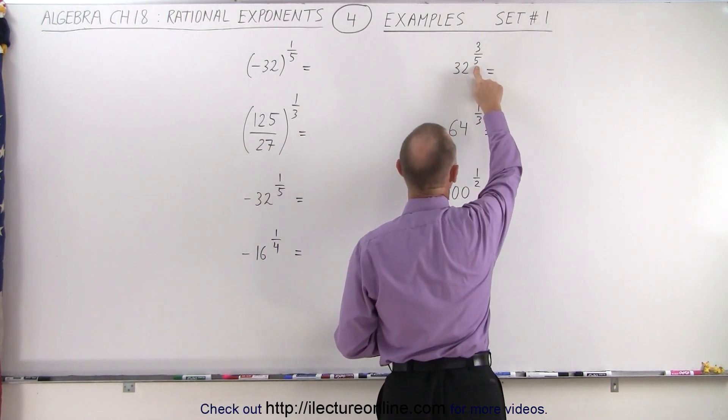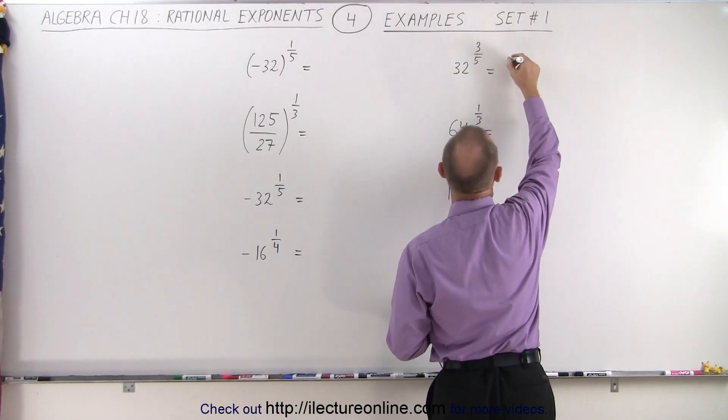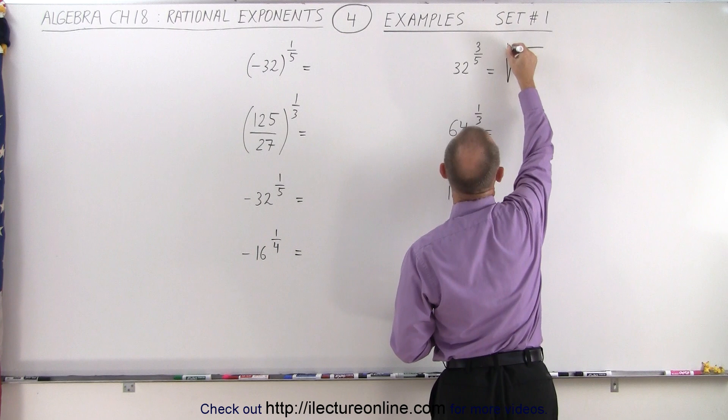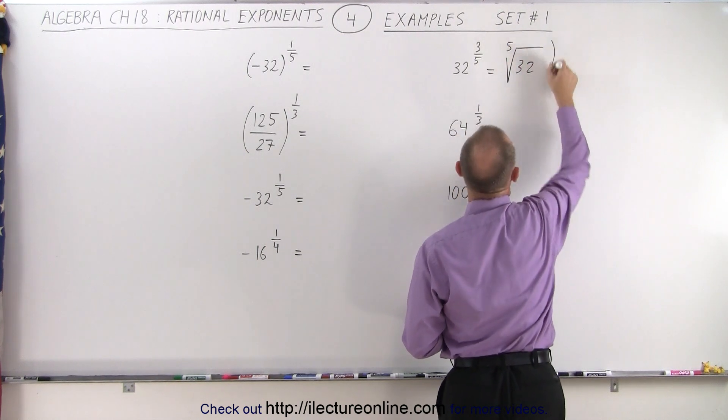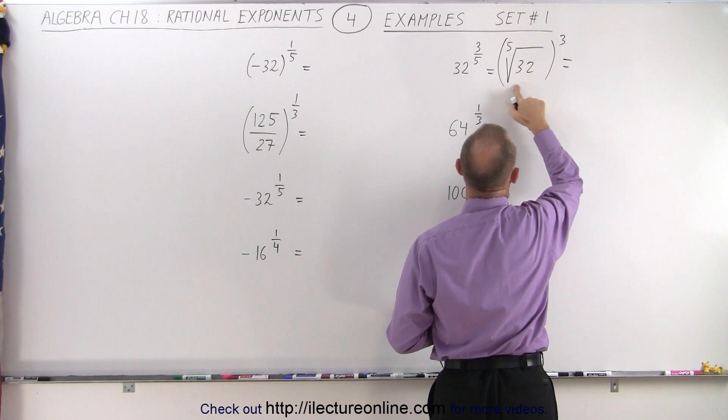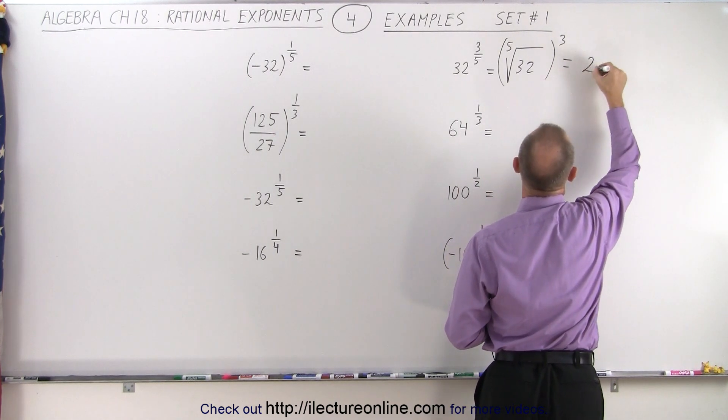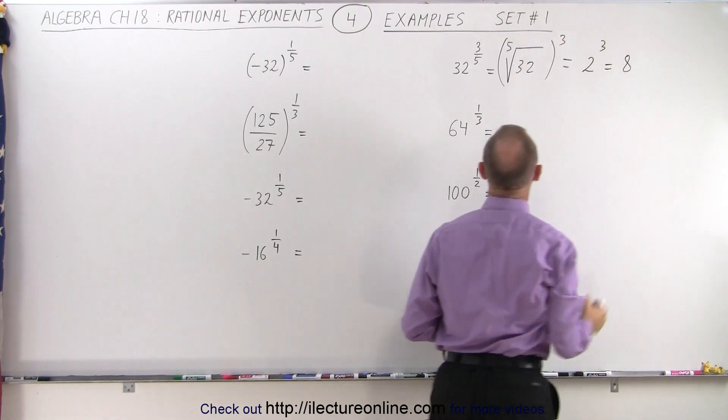We just want to remember again what that means. The number in the denominator means the root. The number in the numerator means the exponent. So this can be written as the fifth root of 32 and the whole thing raised to the third power. So now we have to simply work out what's inside. The fifth root of 32 is equal to 2, so we get 2 to the third power, which is equal to 8.